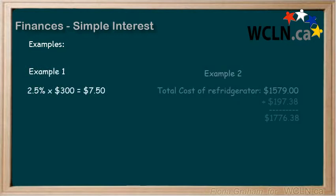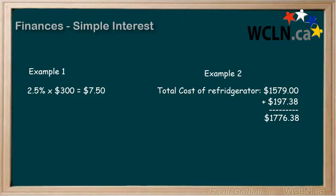These two examples have been simplified so you can understand the basic math of simple interest. But usually people would be putting some of their savings into the bank every month, not just once a year. And they would also be paying off things that they bought every month, not just at the end of the year.